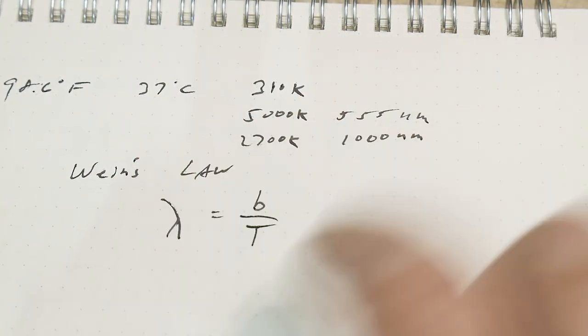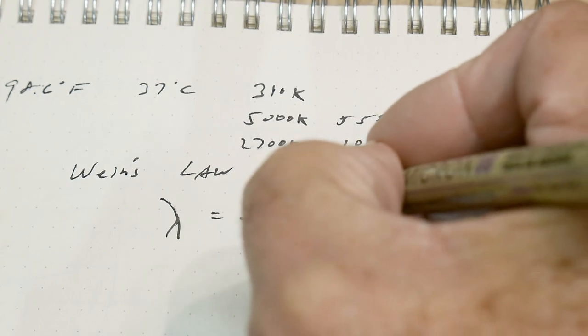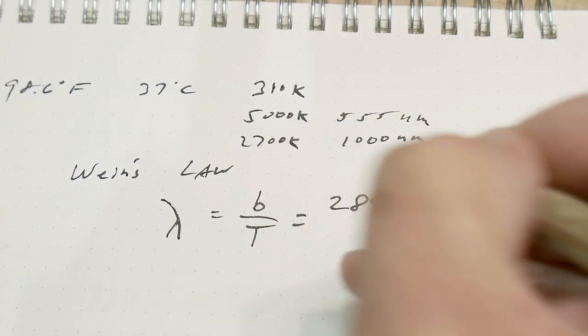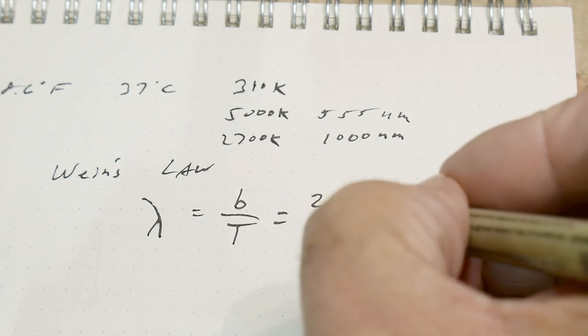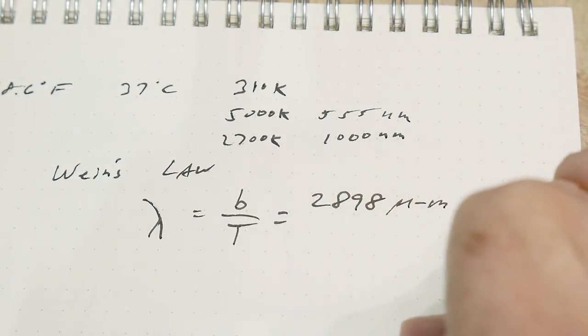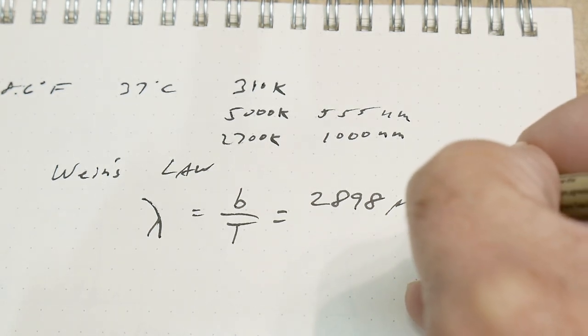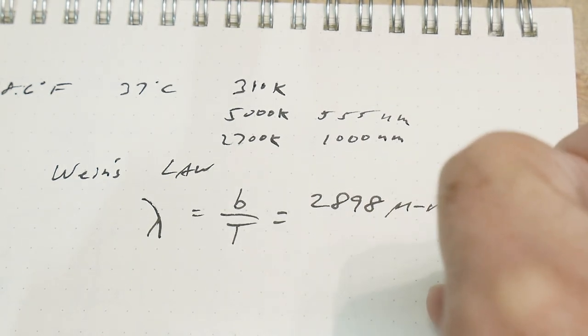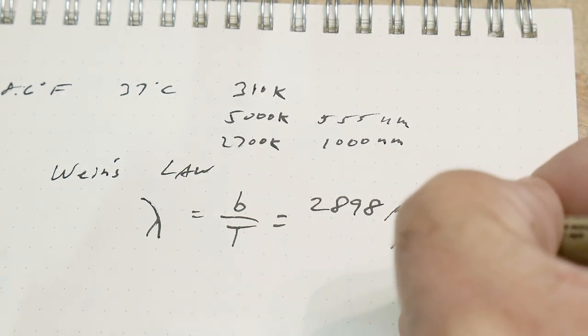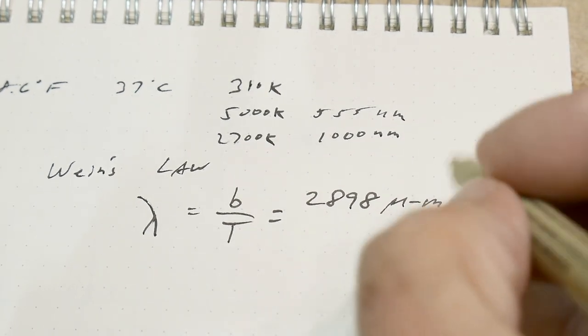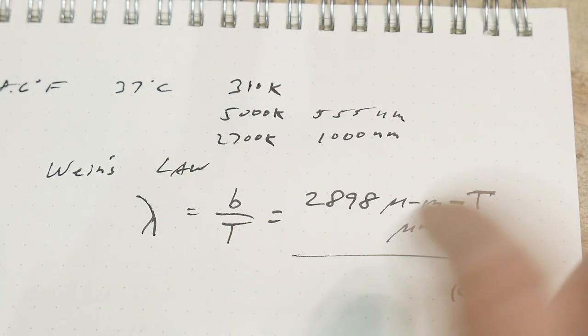The units are micrometer Kelvin, and if you divide that by Kelvin you end up with micrometers. What do we have? We have 310, so if you have 2.898 and divide that by 310, you need a calculator.